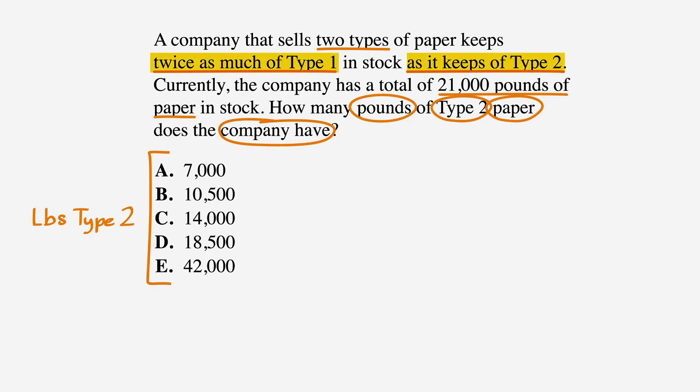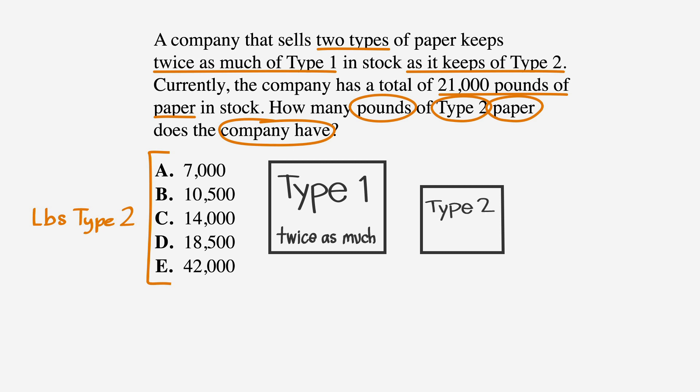We know there's twice as much of Type 1 as Type 2. To represent this, let's draw a box for Type 1 and a box one-half the size to represent Type 2. We can label them Type 1 for the large box and Type 2 for the smaller box. We also know the company has a total of 21,000 pounds of paper, so let's add a plus sign and equals 21,000 to show that we're adding Type 1 and Type 2.